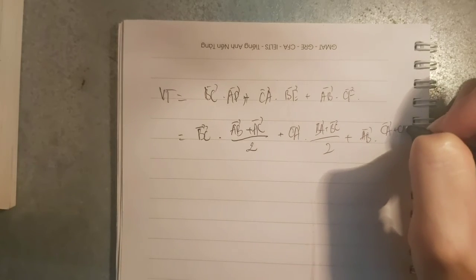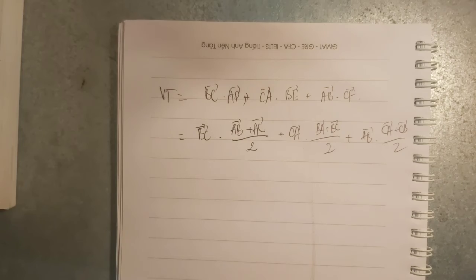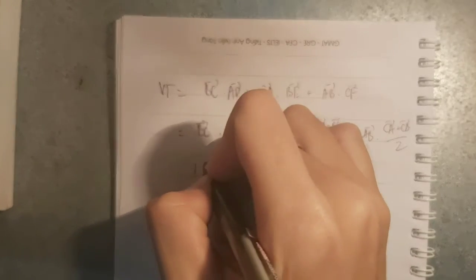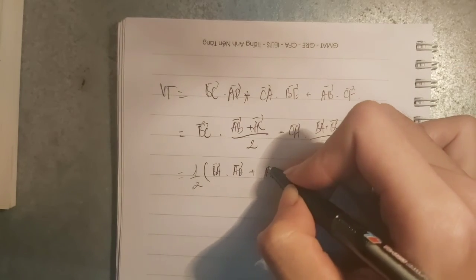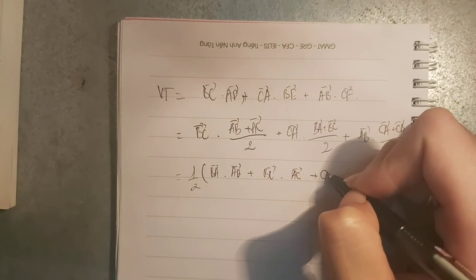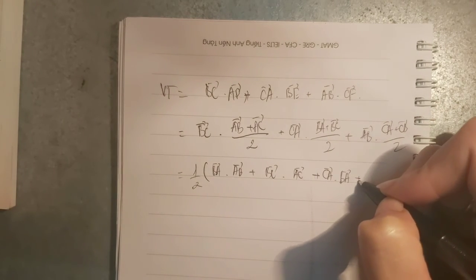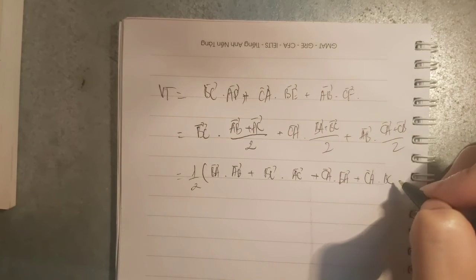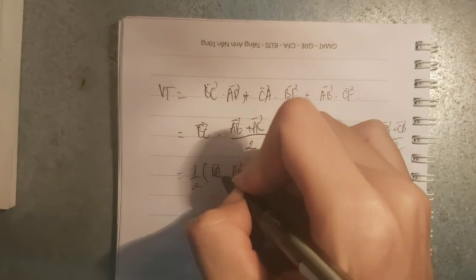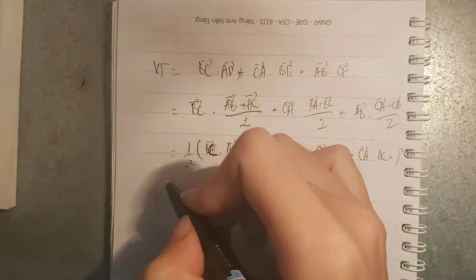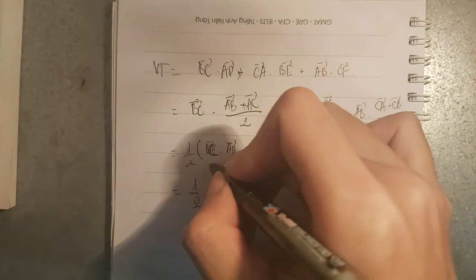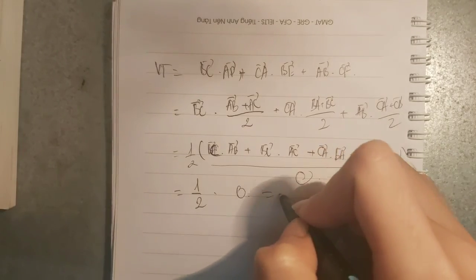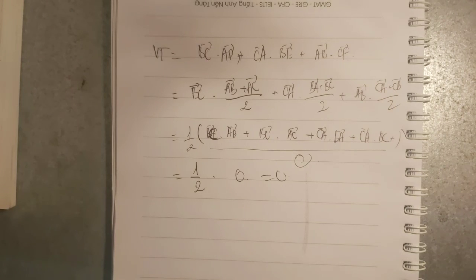Thì nó sẽ là 1/2, bên trong này sẽ có BA·AB, BC·AC, CA·BC. Bên trong sẽ bằng 0, số này bằng 0 và số này sẽ bằng 0. Hôm nay chúng ta sẽ dừng ở đây thôi. Bye bye mọi người.